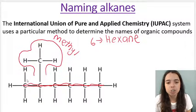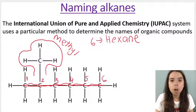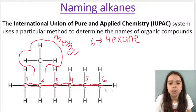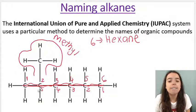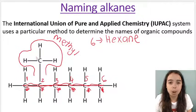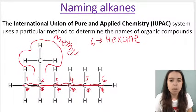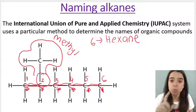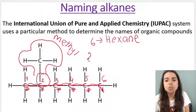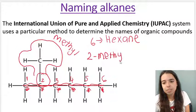If I number the carbons in the main chain from left to right: one, two, three, four, five, six — my methyl branch is on carbon two. If I numbered the other way — one, two, three, four, five, six — the methyl branch would be on carbon five. Obviously two is lower than five, so we stick with numbering left to right. The rule is you always prioritize the branches — we want to give branches the lowest number. So my branch is on carbon two, it's a methyl branch, and my main chain has six carbons. The name is 2-methylhexane.